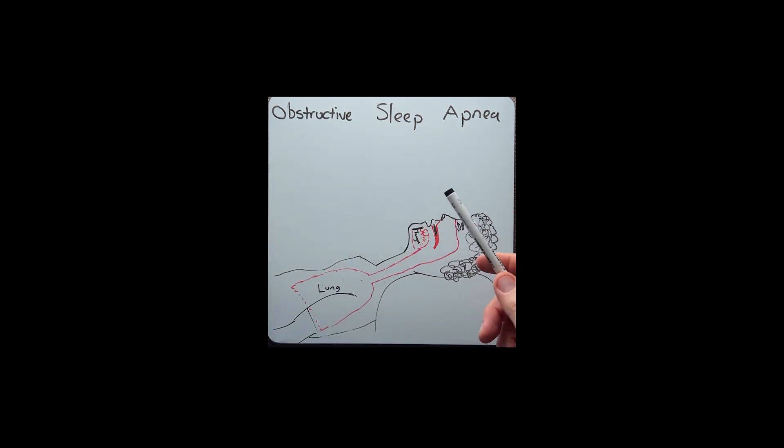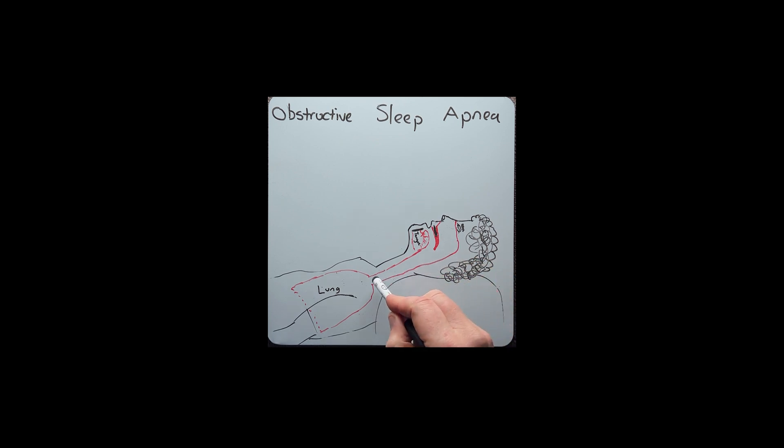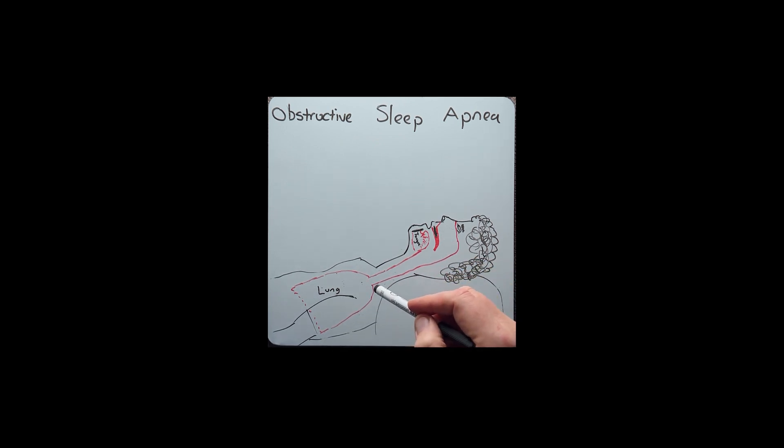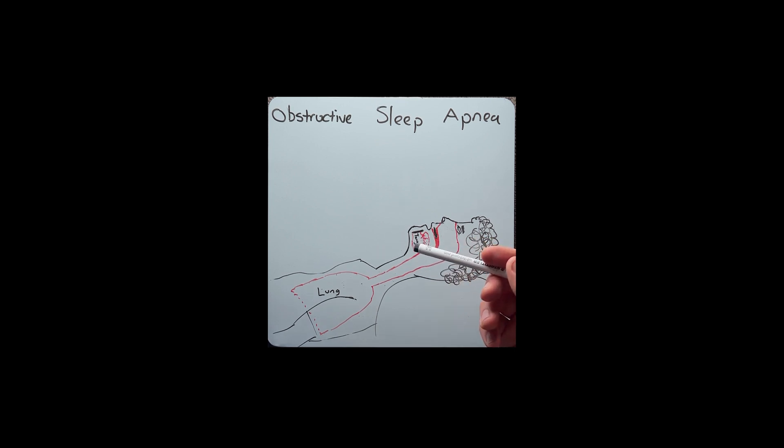Obstructive sleep apnoea is where your breathing stops for a short period of time while sleeping. This is caused by something that obstructs the airway during sleep. Obstructive sleep apnoea impacts about 5% of the whole population. Let's have a closer look to see how it occurs.